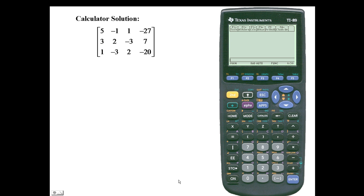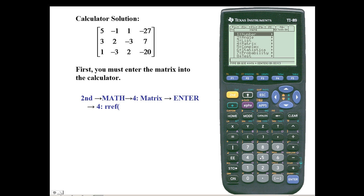Let's take a look at the calculator solution. First, we must enter the matrix into the calculator. Press second and the number 5, which is the math function. Scroll down to the fourth option, which is matrix. Press enter. Scroll down to the fourth option once again, which is RREF, reduced row echelon form. Press enter.